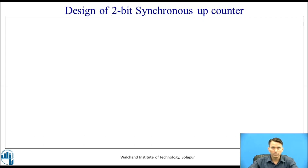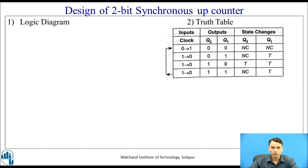Now let us design a 2-bit synchronous up counter. Whenever it is 2-bit, we have to use two flip-flops. Let us write the truth table first. In the truth table you can see the clock input, then the output and state changes. In the output we have the outputs of two flip-flops represented as Q2 and Q1.